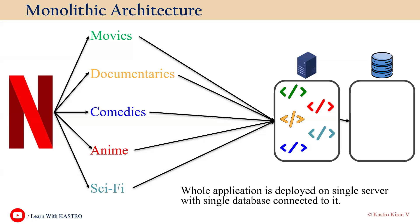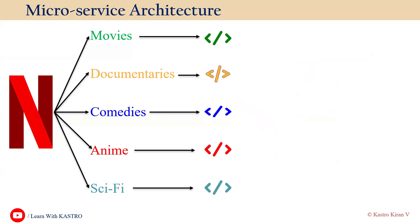Now let's understand microservice-based architecture. In microservice-based architecture, using the same Netflix application example, we have different categories like movies, documentaries, comedies, animations, and sci-fi.